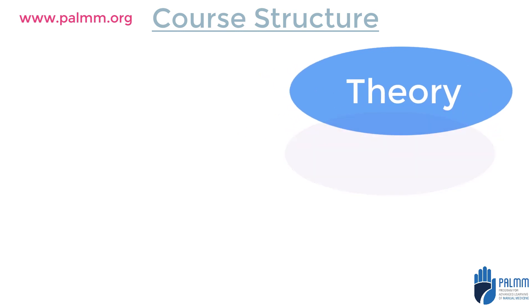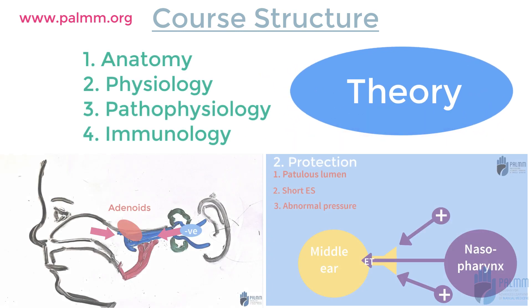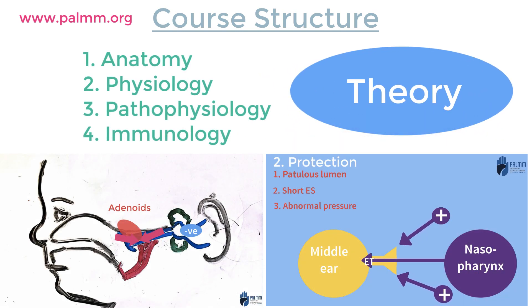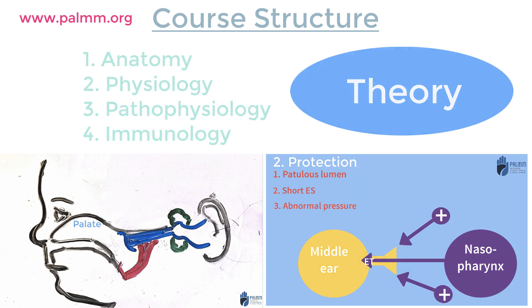The theory section has four modules: anatomy, physiology, pathophysiology, and immunology of the eustachian tube.